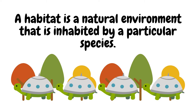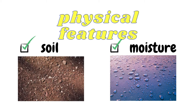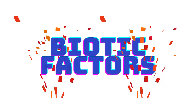A habitat is a natural environment that is inhabited by a particular species of living organism. It is characterized by physical features such as soil, moisture, temperature range, and availability of light. It is also characterized by biotic factors such as food availability and the presence of predators.